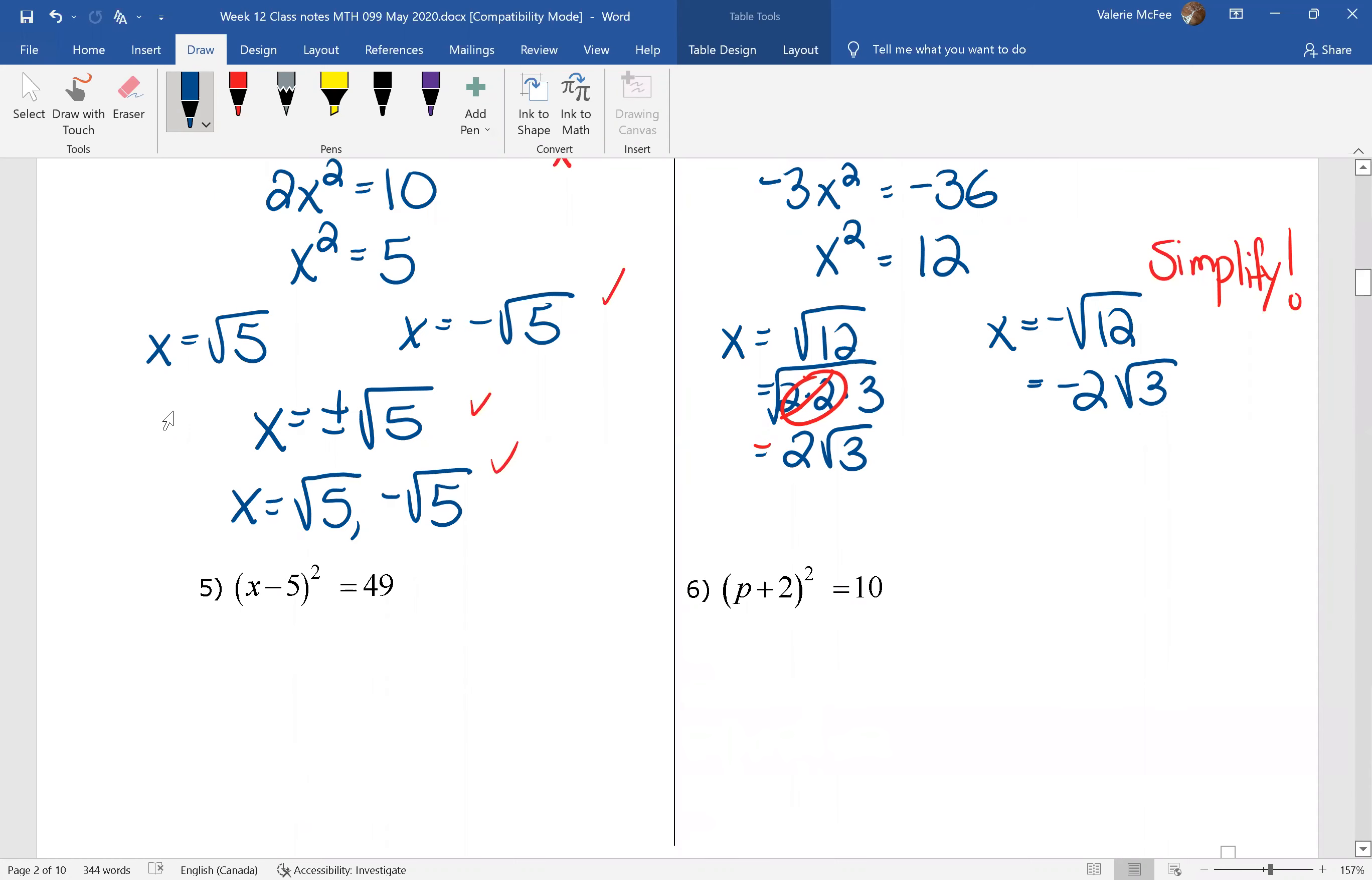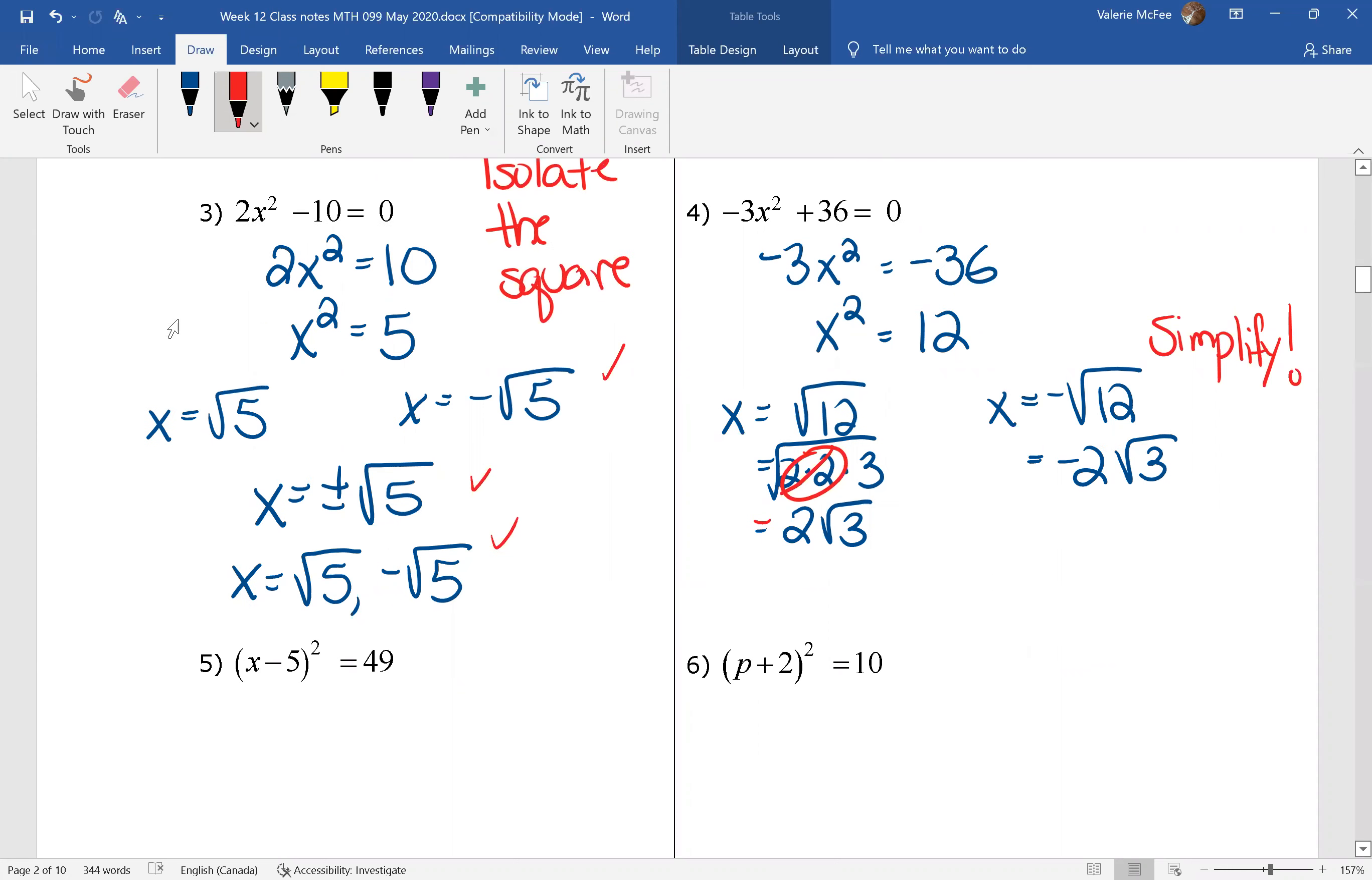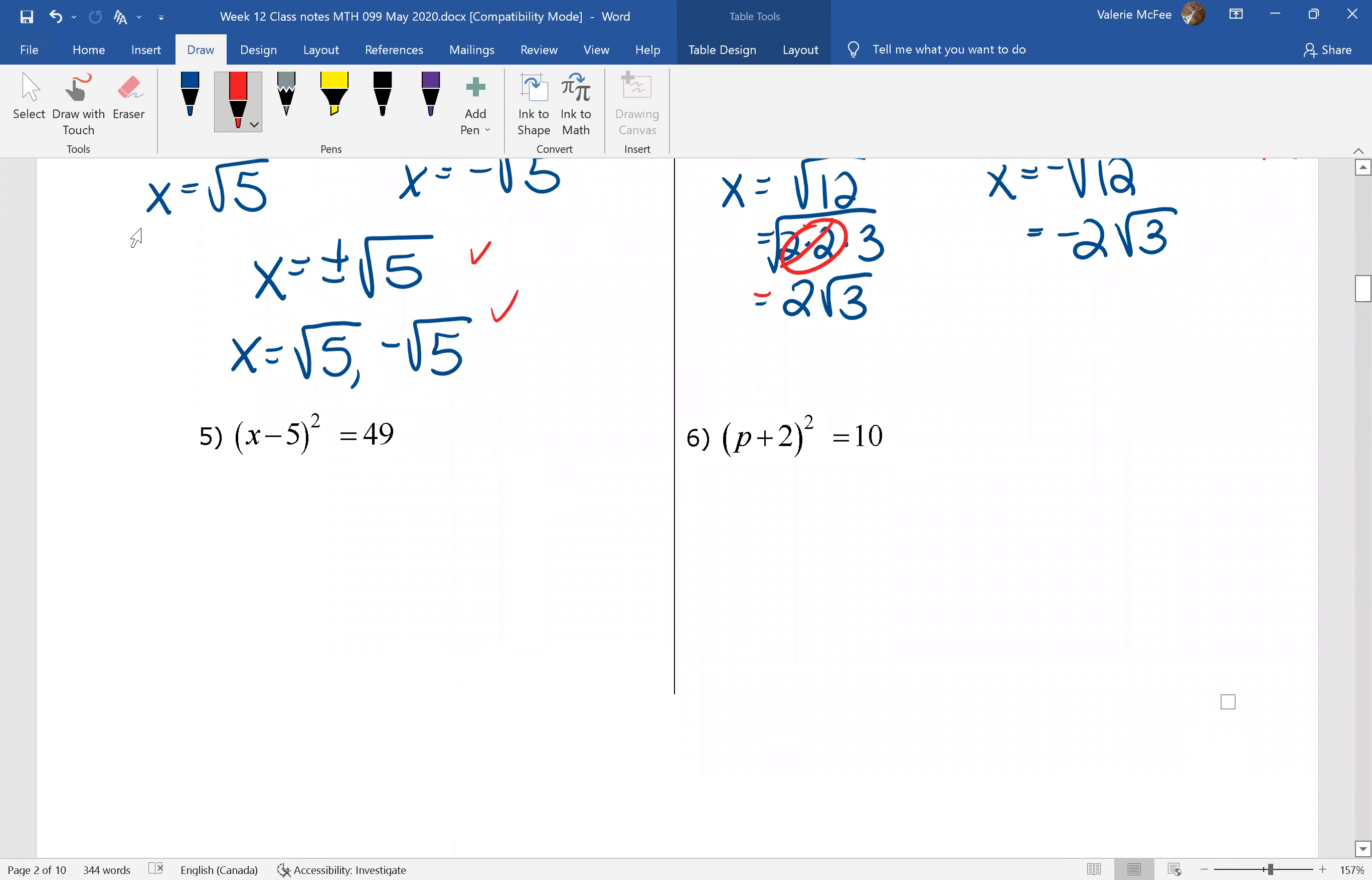Question 5 is interesting. Now up here I said isolate x squared. Maybe I should just say isolate the square rather. Because if I look at question 5, I can't isolate x squared without opening the bracket. And we don't want to do that when we're using the square root property.